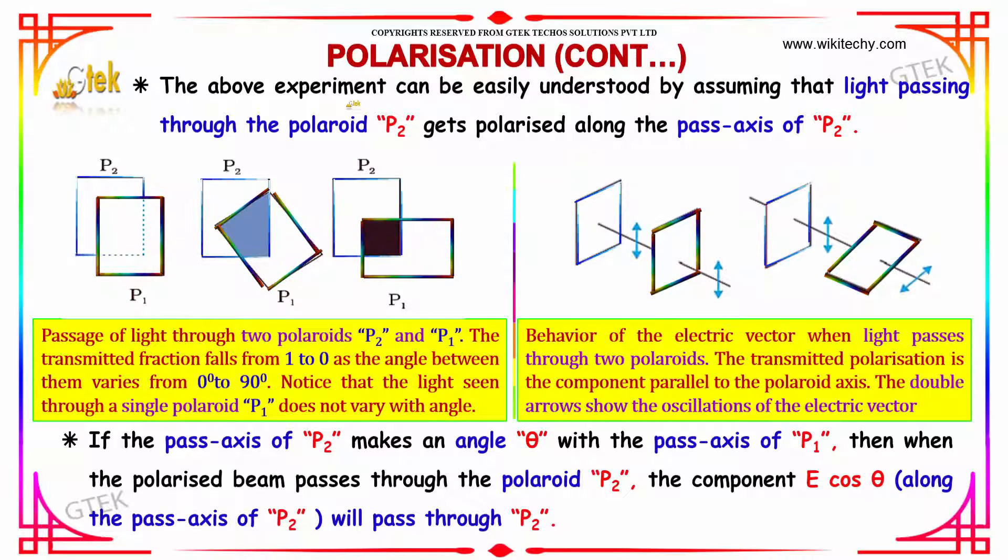The above experiment can be easily understood by assuming that the light passing through the polaroid P2 gets polarized along the pass axis of P2. If the pass axis of P2 makes an angle theta, then when the polarized beam passes through the polaroid, the component E cos theta along the pass axis will pass through.